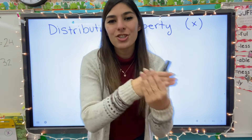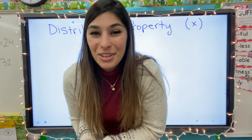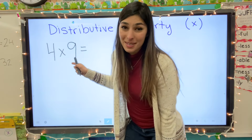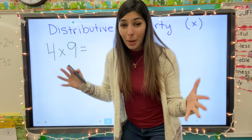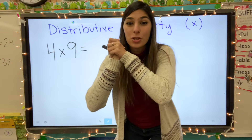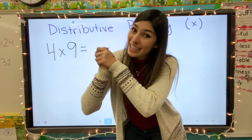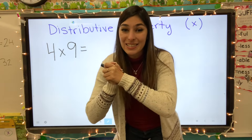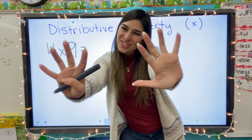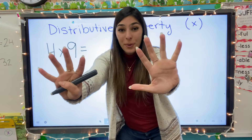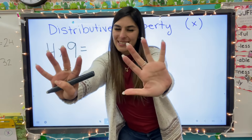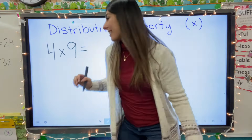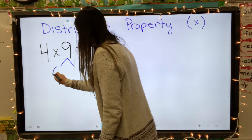With the distributive property, we've got to break the big number, share the love, and then add. Let me show you the first equation. So let's say we have four times nine. Well, nine is a really big number, so I'm going to take that nine and break it apart into two smaller numbers — an addition equation that we can better multiply with. Go ahead and show me nine on your fingers.